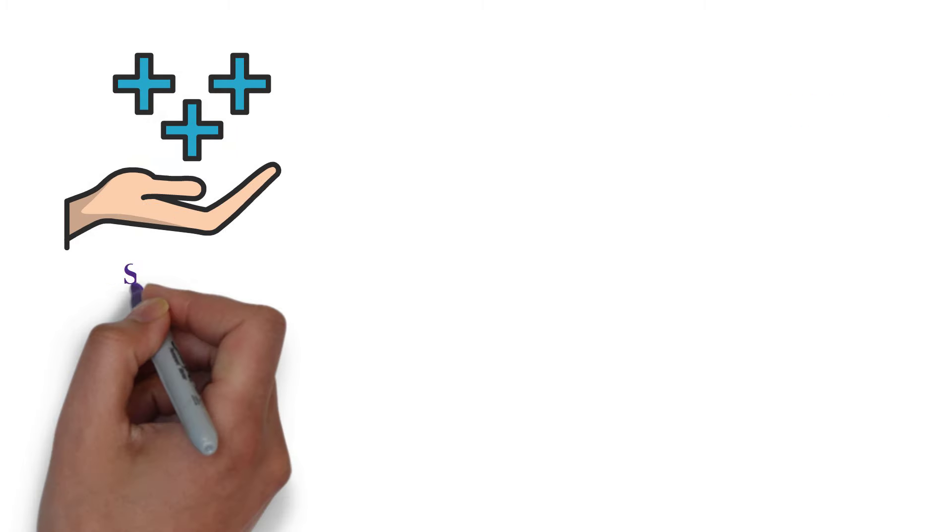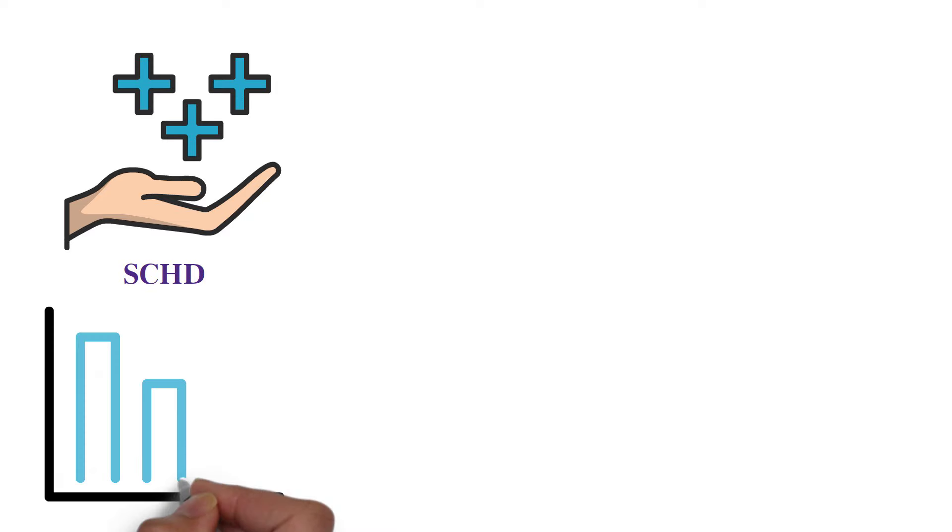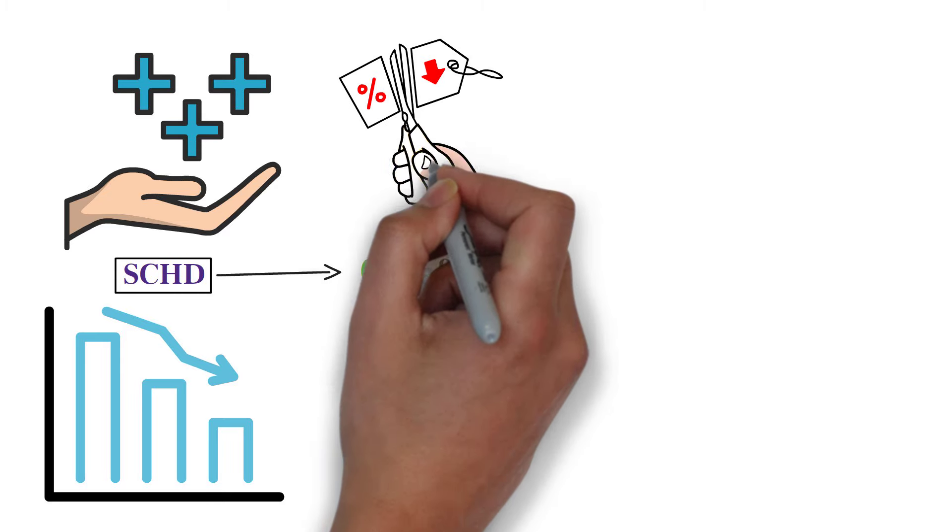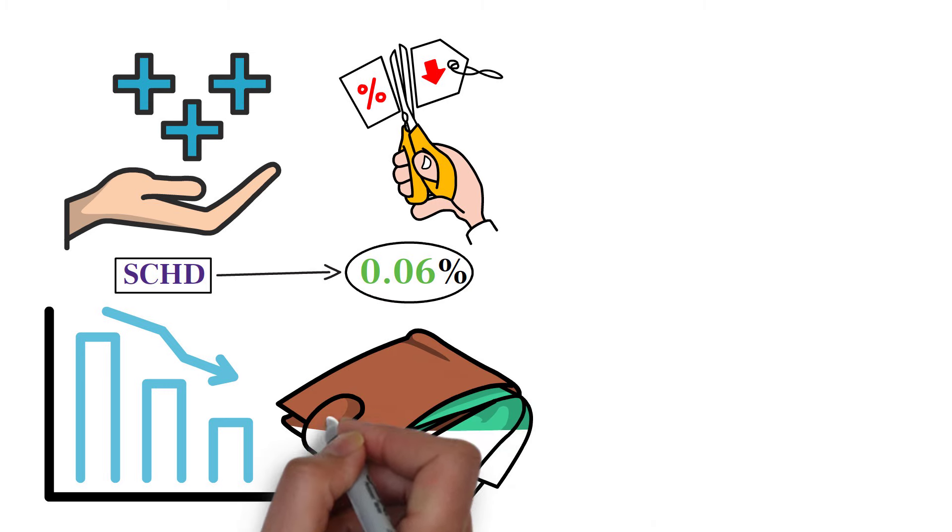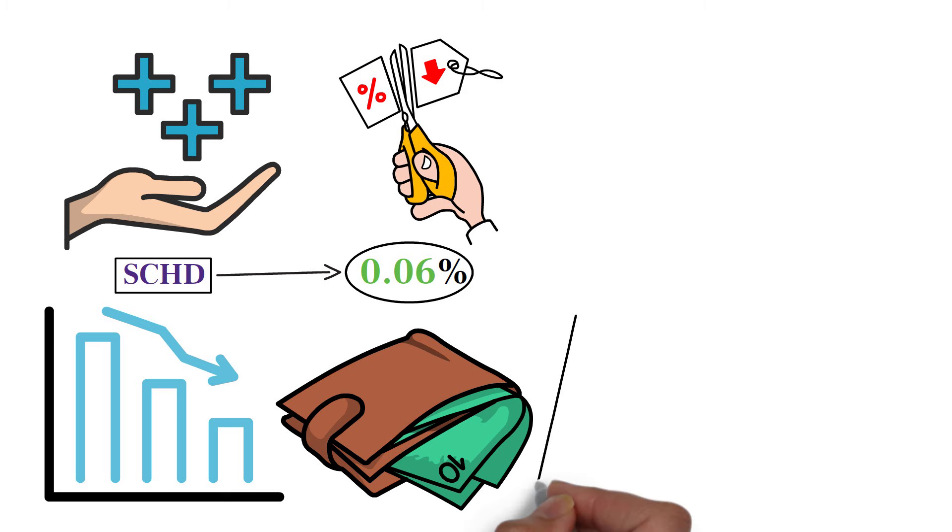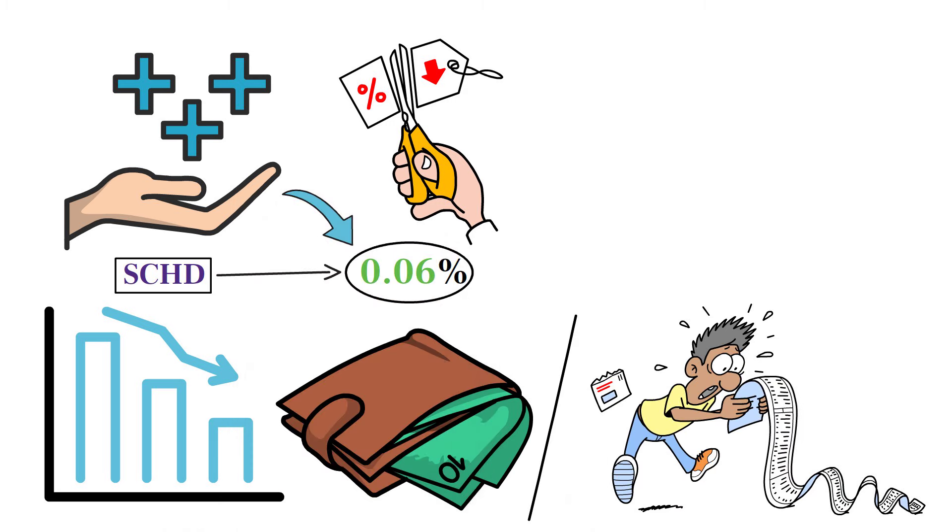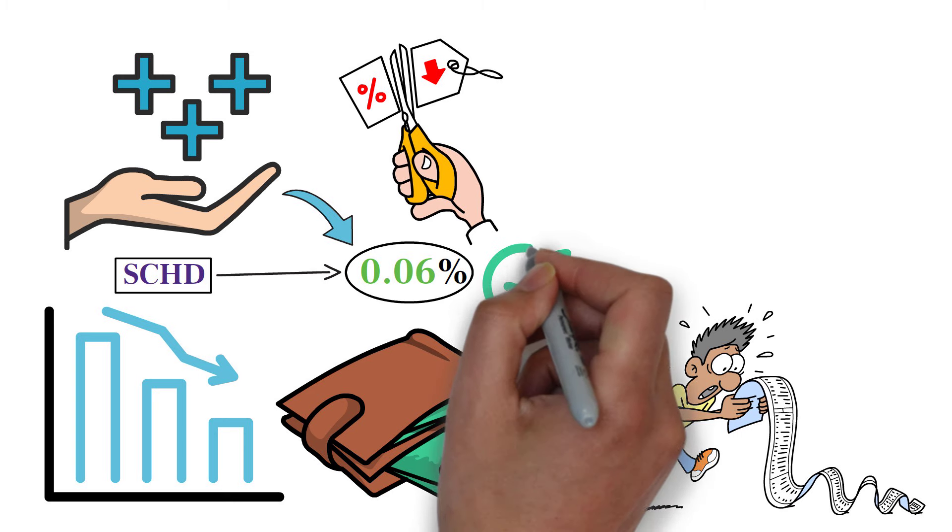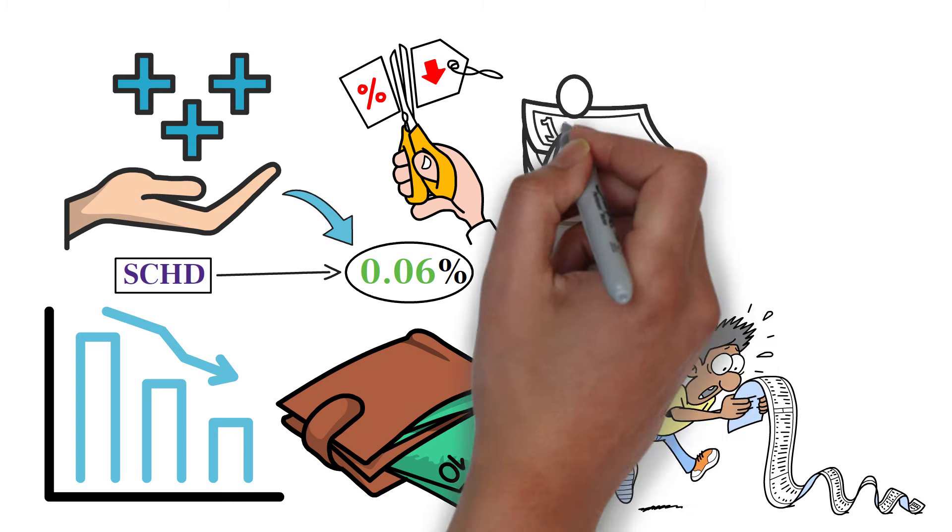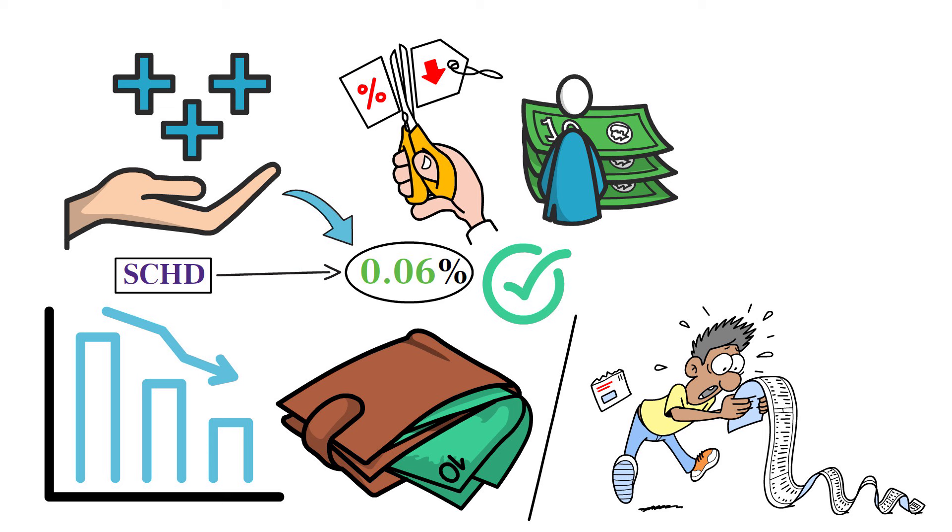Another key advantage of SCHD is its incredibly low expense ratio. SCHD boasts an expense ratio of just 0.06%, making it one of the most cost-effective options in its category. This low expense ratio means that a larger portion of your investment return stays in your pocket, rather than being eaten up by management fees.